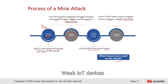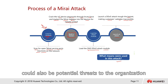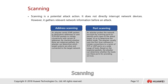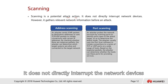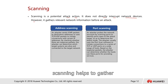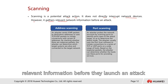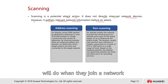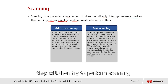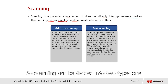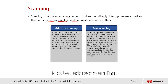This describes the process of the Mirai attack. The means used include weak IoT device passwords. Scanning is also a potential attack method — it does not directly interrupt network devices, but it helps gather relevant network information before launching an attack. This is usually what attackers do when they connect to a free Wi-Fi network at a café.